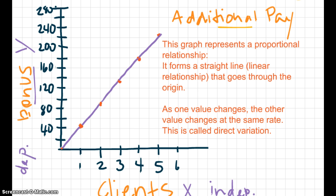Alright, now I want you to pay attention to what I have written right here. This graph represents a proportional relationship. It forms a straight line, we call that a linear relationship, that goes through the origin.